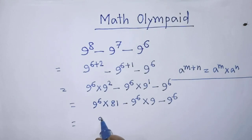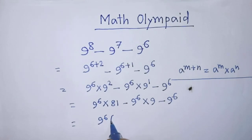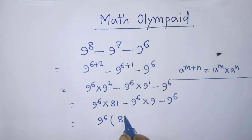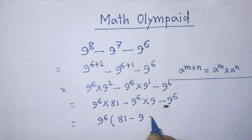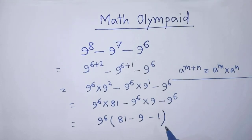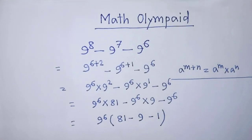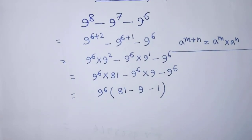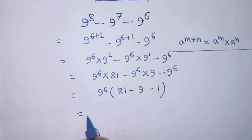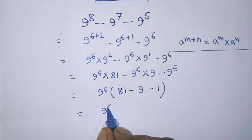Factoring out 9 to the power 6, it becomes: 9 to the power 6 times the quantity 81 minus 9 minus 1, which gives us 9 to the power 6 times 71.